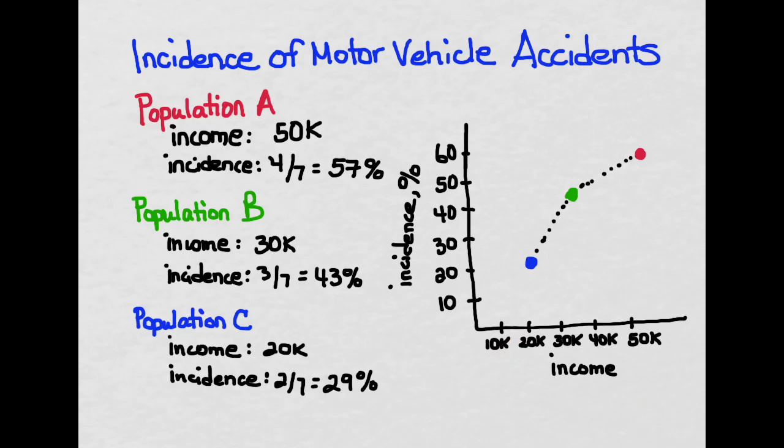Over here we've got population A, indicated by the red dot. Population A has a mean income of $50,000 and an incidence of car accidents at 57%. Population B has an average income of $30,000, incidence of 43%. And population C, income of $20,000, incidence of 29%.